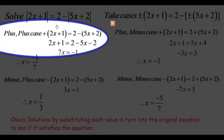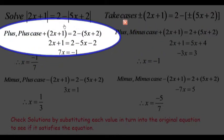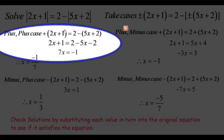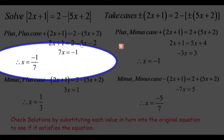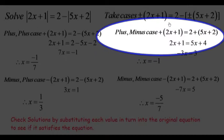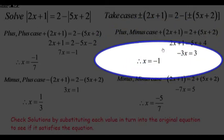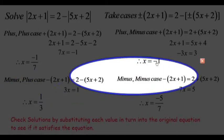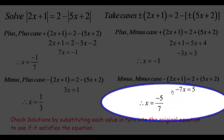The plus plus case gives us x = -1/7. The plus minus case gives us x = -1. The minus plus case gives us x = 1/3. And the minus minus case gives us x = -5/7. So we actually have four solutions, which we now have to substitute back into our original equation to check.